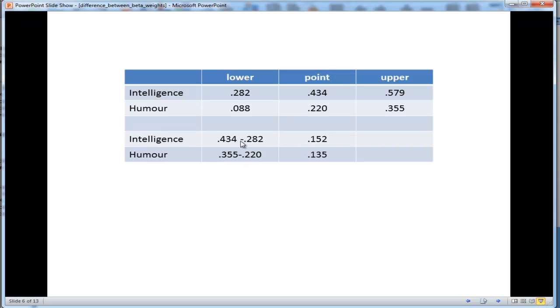So I've subtracted 0.434 from 0.282 to get the lower bound of the higher point estimate confidence interval, and I've done the same thing for the upper bound confidence interval for the lower point estimate. They should equal something pretty close to each other in most cases. They won't be exactly the same. In this case, I've got a difference of 0.152 and 0.135, and I've calculated the average of that.